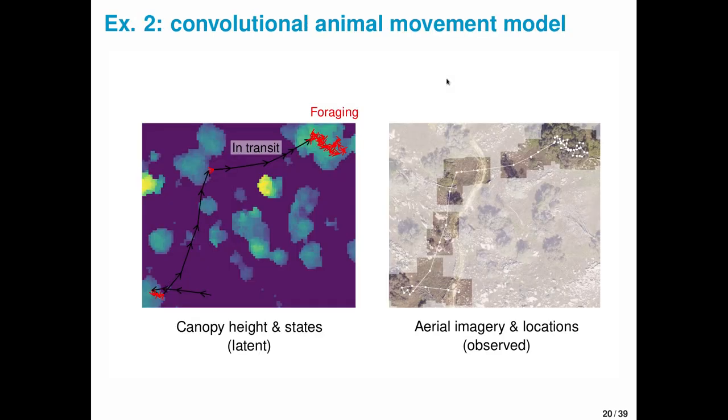As a second example, I'll outline a convolutional animal movement model. This is more like a proof of concept; it's a simulated example. On the left I'm showing a canopy height model where yellow is the top of a tree and dark blue is the ground, and a simulated movement trajectory for some critter that likes to forage in trees. This critter has two behavioral states: in transit shown in black, and foraging shown in red.